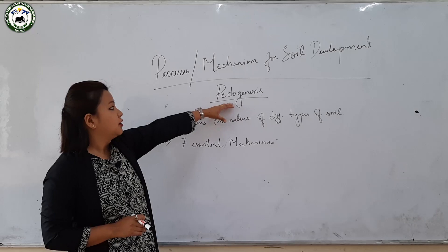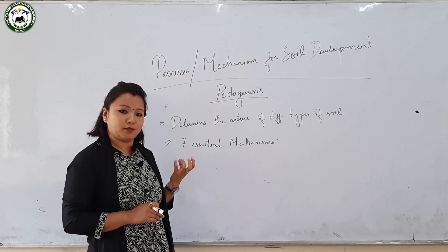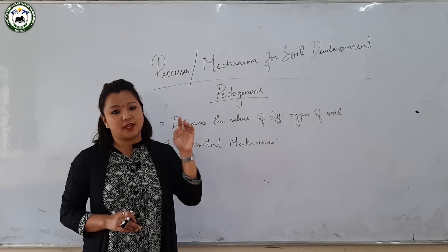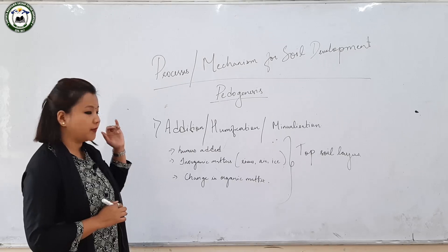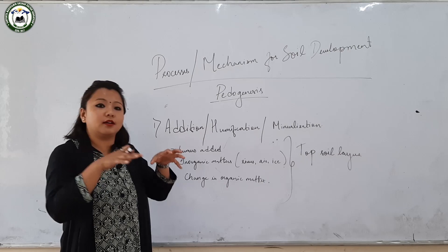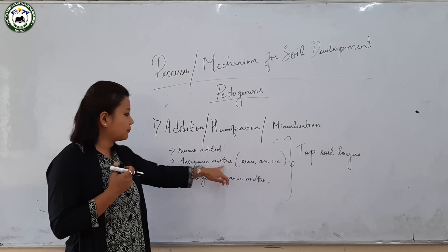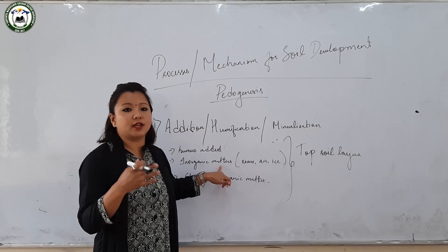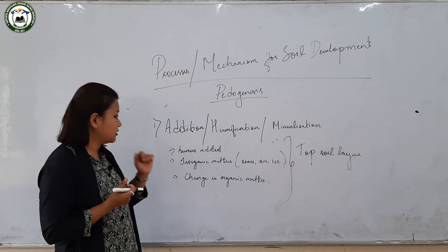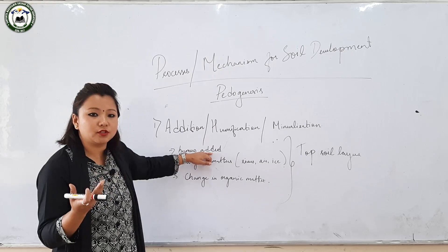Now coming to the processes or mechanisms of soil development, also regarded as pedogenesis or soil genesis. It is due to these mechanisms that different types of soil are formed. Pedogenesis consists of seven different important mechanisms. The first is addition, humification, and mineralization. Addition means adding up — humus and inorganic matter are added. Inorganic matter or soil particles are brought down by rivers, air, and ice through erosion. Humus is added through the decomposition or decay of plants and animals.